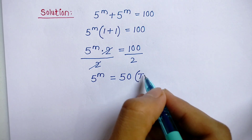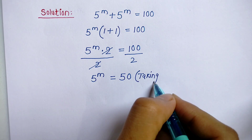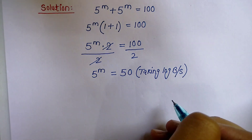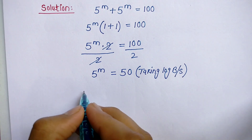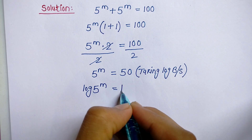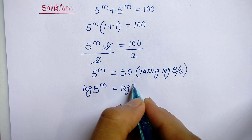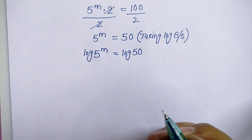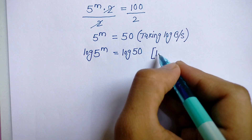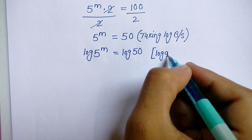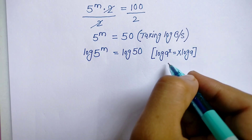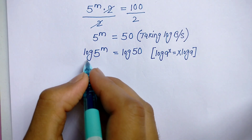Now taking log on both sides, we get log of 5 power m is equal to log 50. We know the exponential formula of log: log a to the power x is equal to x times log a. Using this formula, we get m times log 5 is equal to log 50.